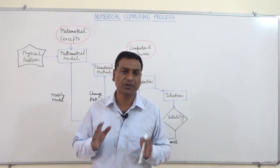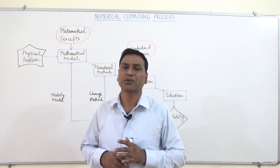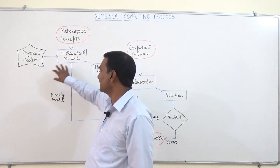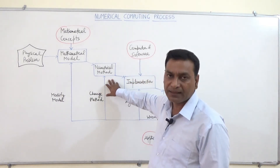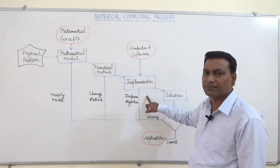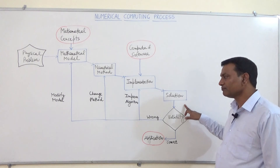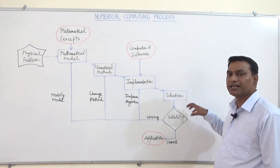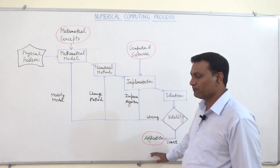This is the normal process that we use in numerical computing — the numerical computing process contains various phases. First we take the physical problem, then we make the mathematical model using some mathematical concepts. Then we develop an approximate method, that is the numerical method, then we develop the program for this numerical method, find the solution, incorporate real or test data, check its validity, and if it is correct this is the final application.